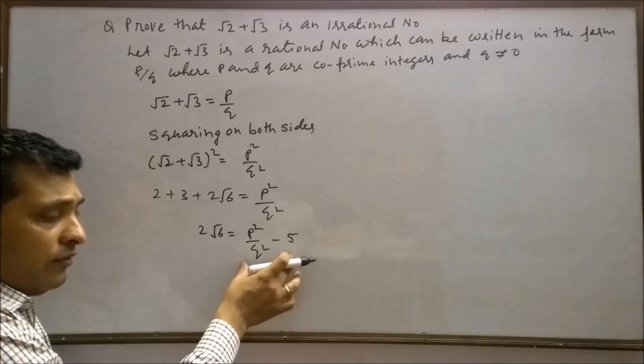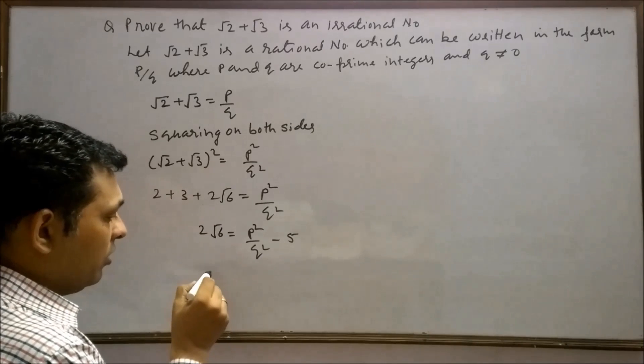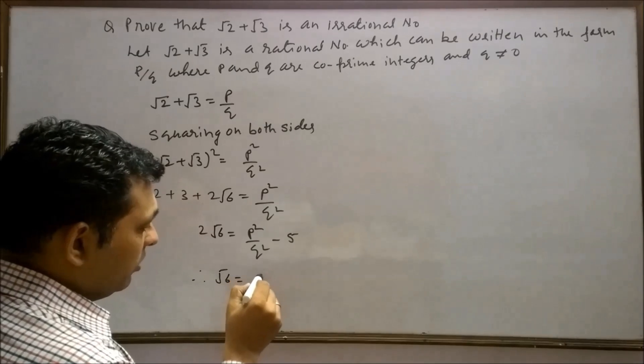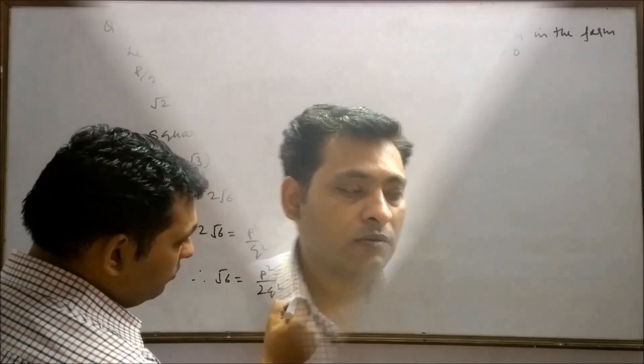Now divide the right hand side by 2. Therefore, root 6 will equal p square upon q square minus 5 by 2.